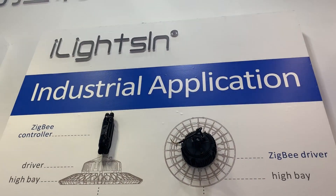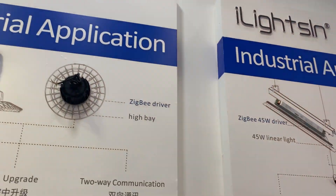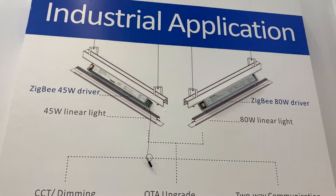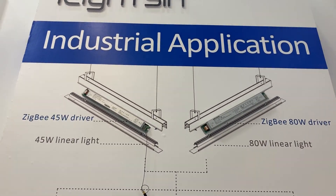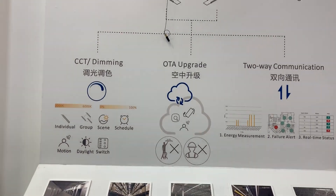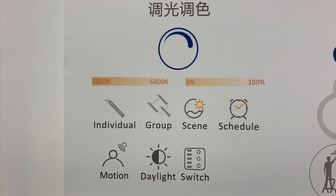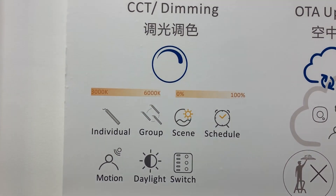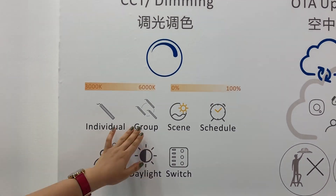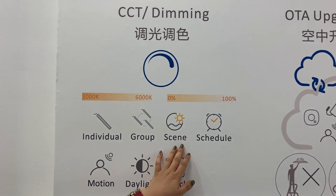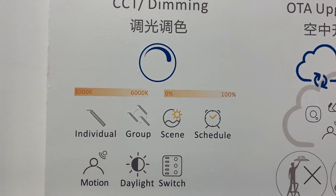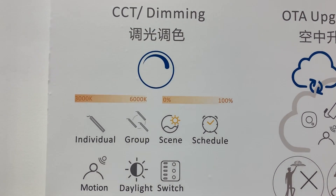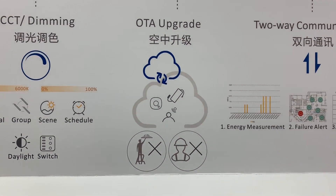That covers Zigbee high bay control. We also have a solution for linear lights, with two drivers — one at 45 watts and one at 80 watts. Functions are quite similar, including power metering. We offer two versions: a simple dimming driver or a CCT plus dimming driver. You can do individual or group dimming, CCT changing, scenario and schedule control, motion and daylight automatic dimming, switch control, over-the-air updates, and two-way communication.